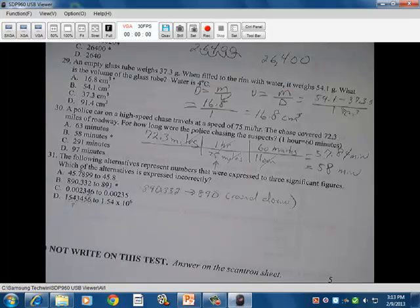So 72.3 times 60 divided by 75 gets you then 57.84 minutes. We then look at our two givens. We have the 72.3, which is three significant figures. We have the 75, which is two significant figures. So therefore, we're going to have two significant figures when all is said and done. So it's 58 minutes. And that will be answer B.